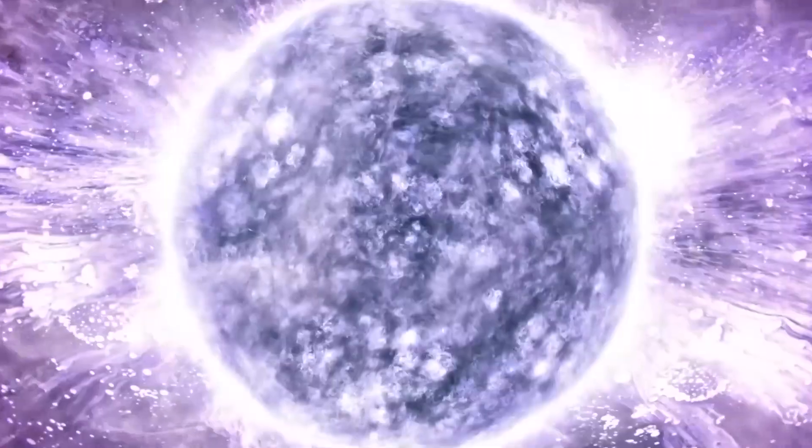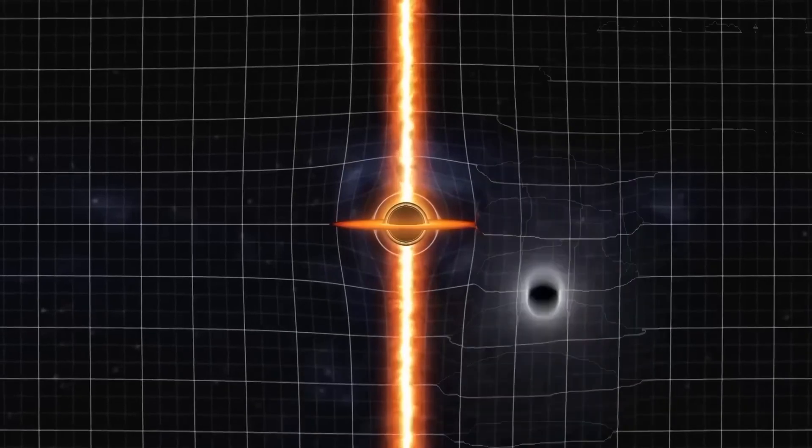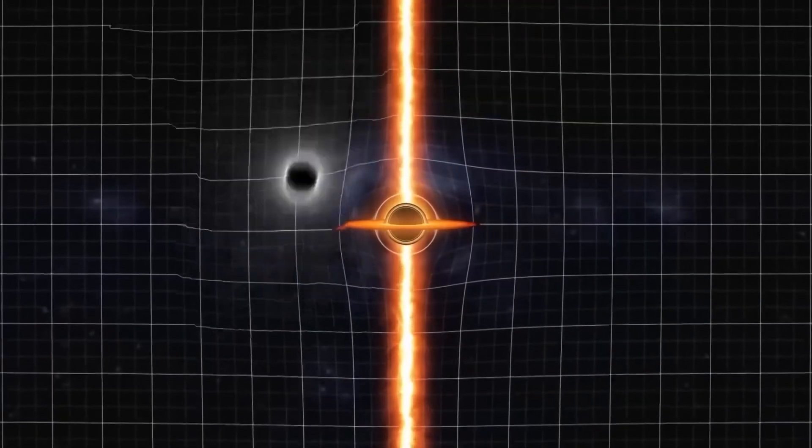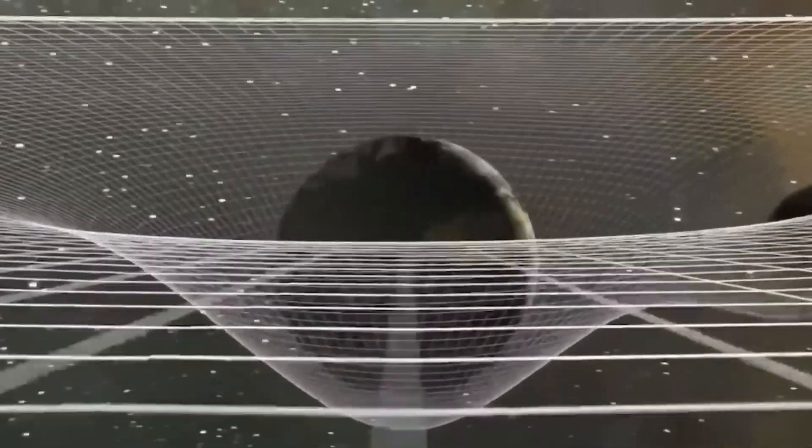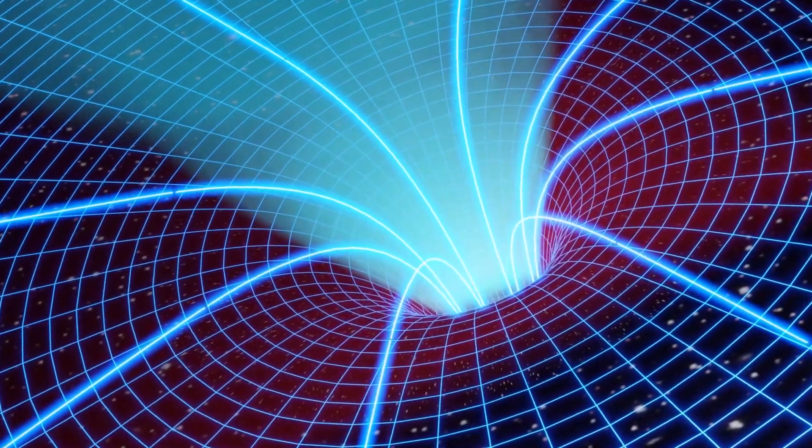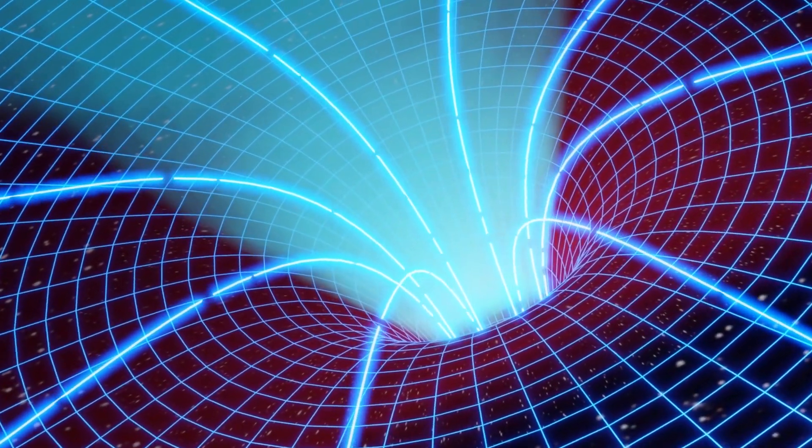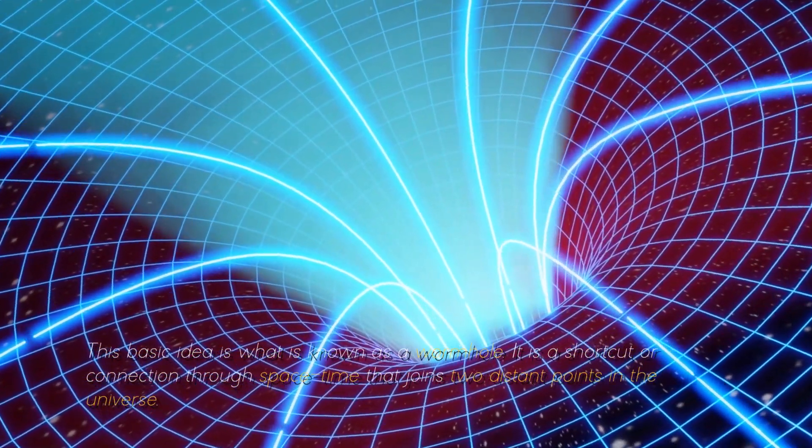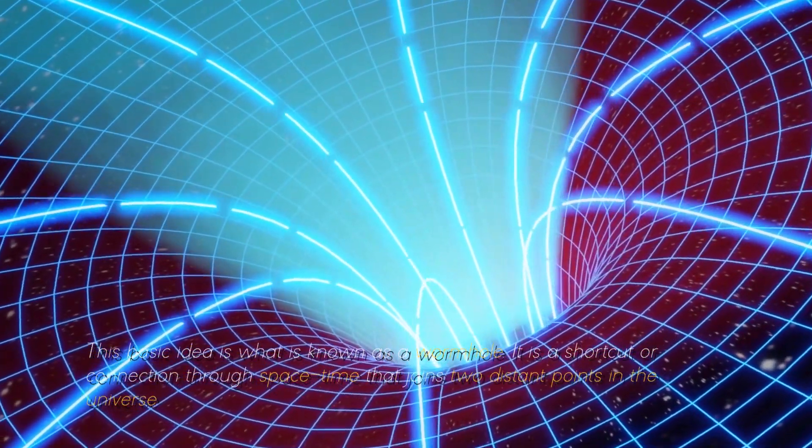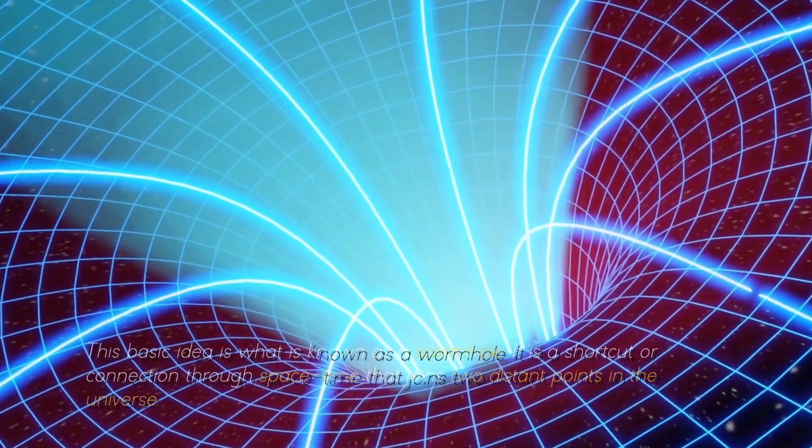To visualize this, we can imagine a sheet of paper representing space-time. If we place two points onto the paper and draw a line between them, we are representing how objects move through space-time. Now, let's consider folding the paper in half and creating a shortcut between those two points. This basic idea is what is known as a wormhole. It is a shortcut or connection through space-time that joins two distant points in the universe.